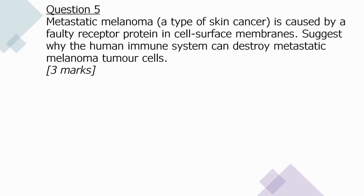Question five: metastatic melanoma, a type of skin cancer, is caused by a faulty receptor protein in cell surface membranes. Suggest why the immune system can destroy these tumour cells (three marks). The faulty receptor protein is identified by the immune system as a foreign antigen. T cells bind to this faulty protein thinking it is foreign; helper T cells stimulate B cells to undergo clonal selection, causing differentiation into plasma cells, which release antibodies against the faulty receptor protein.